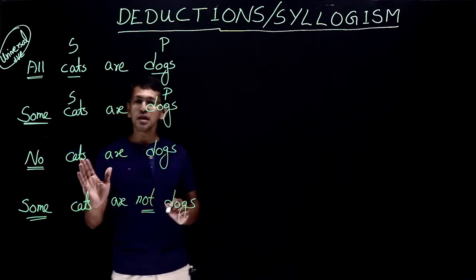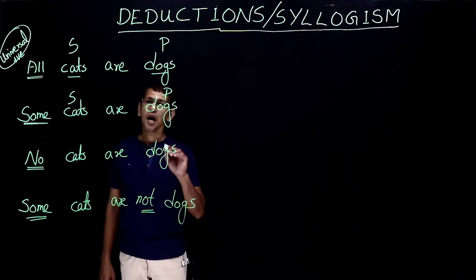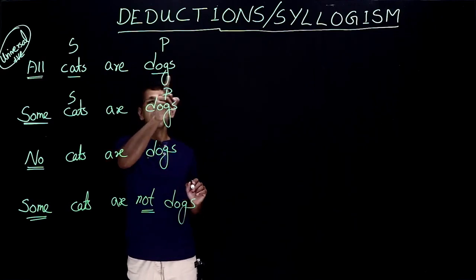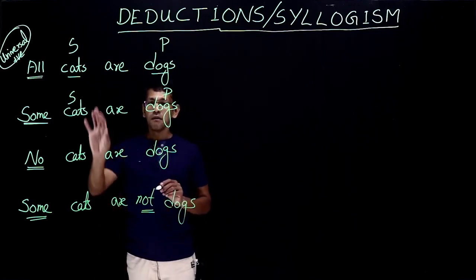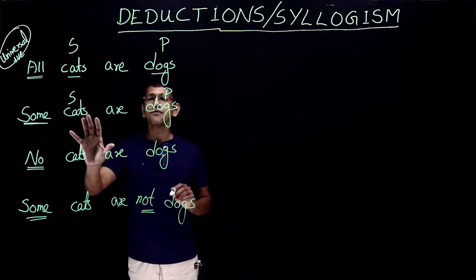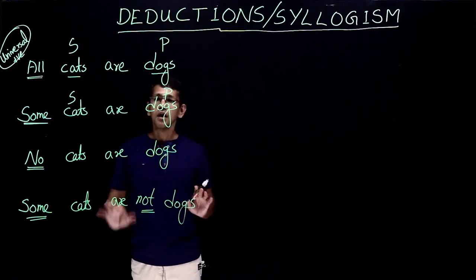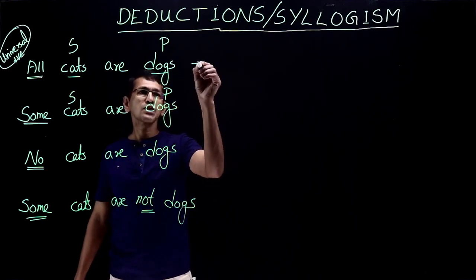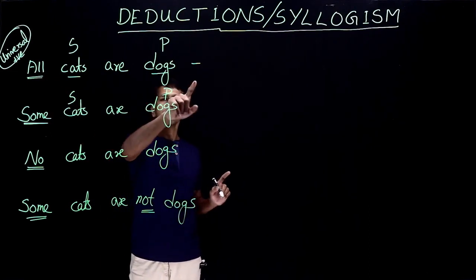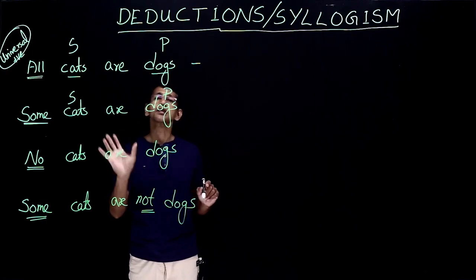Now what is the approach for the real exam? We need to know how to draw Venn diagrams for each of the statements. One thing really good about this approach is we only need to know four standard statements — not 100 or 15, just four. So how do we draw the diagrams? Let's look at the Venn diagram approach. For "all cats are dogs", what would the Venn diagram look like?